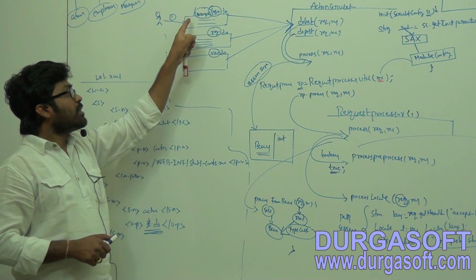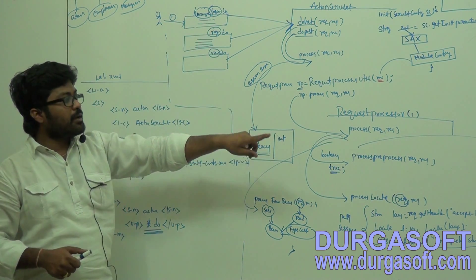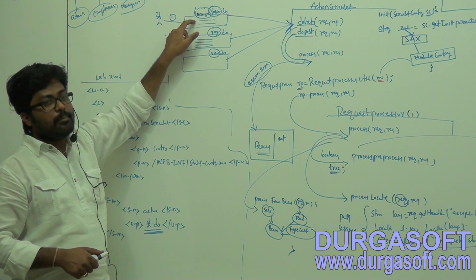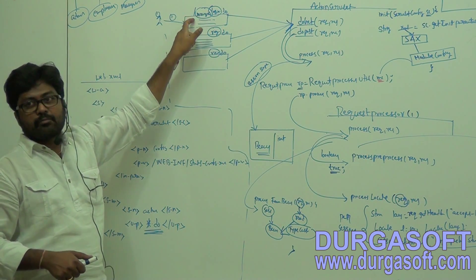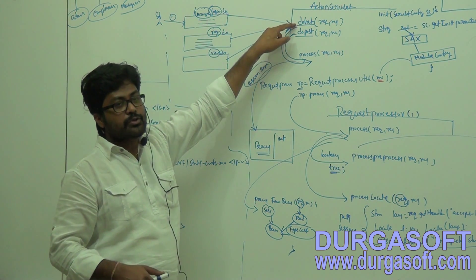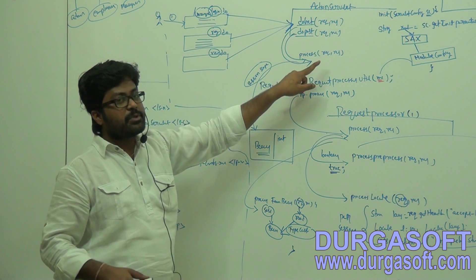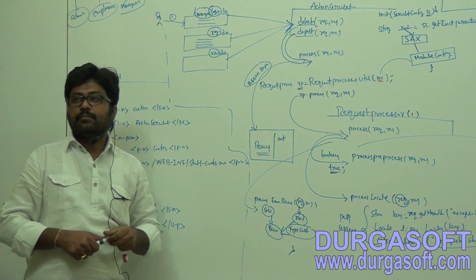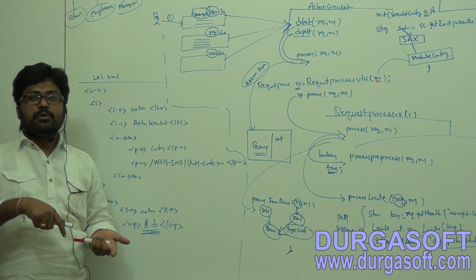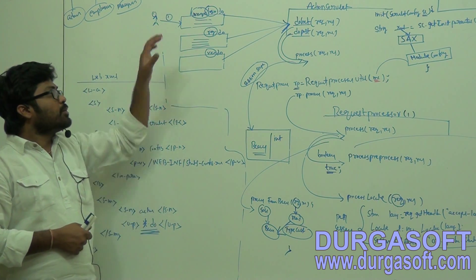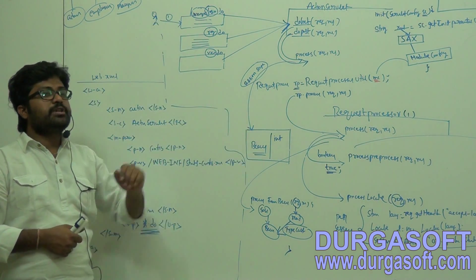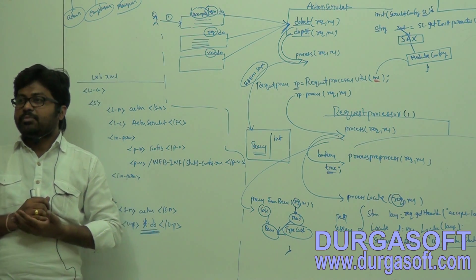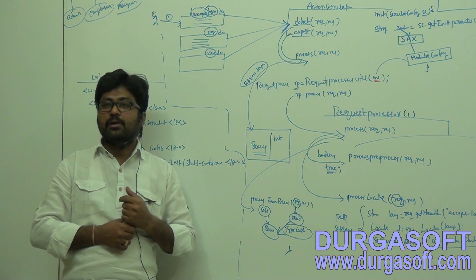If I submit from the same form again after getting an error message, the process is the same. That form request will go to doGet or doPost method. From there it will call the process method. Process method will check whether this bean object is already in session scope. If it finds it in session scope, it will not create one more object. Until closing your browser, the same object it will use - only one bean object created per session.